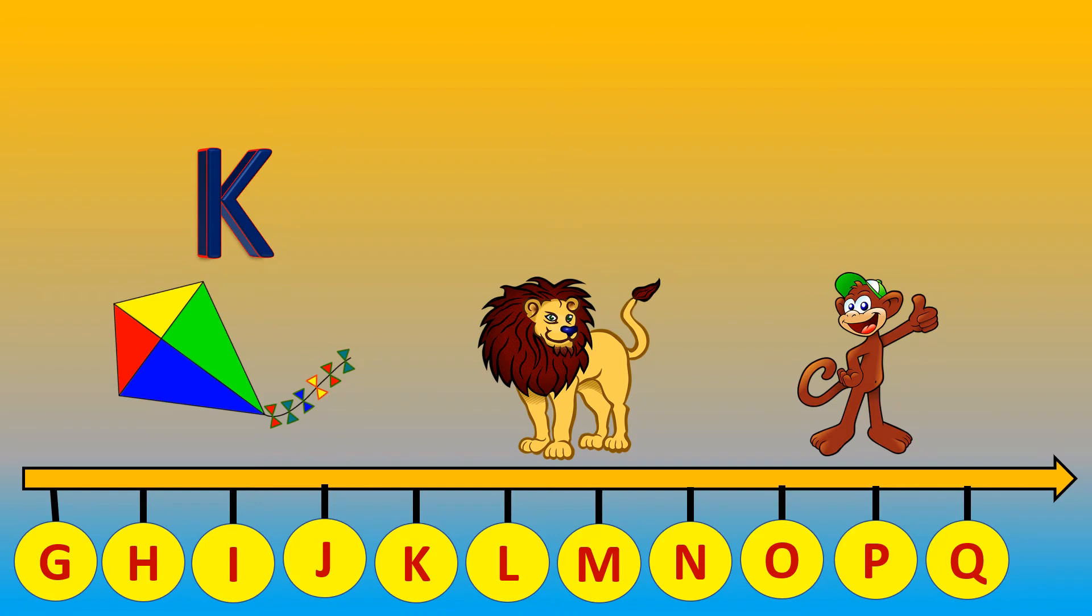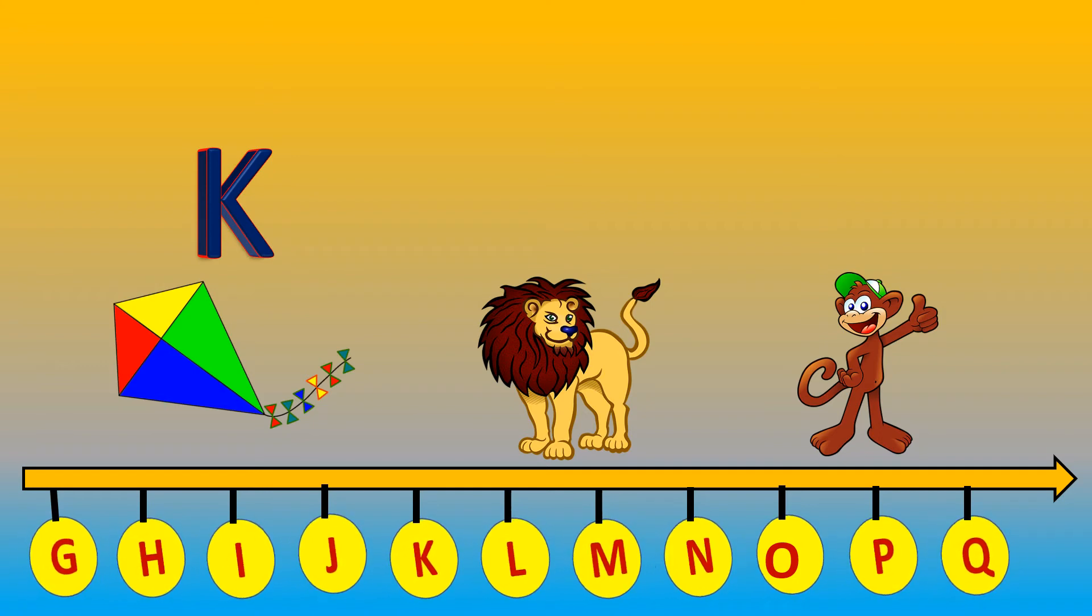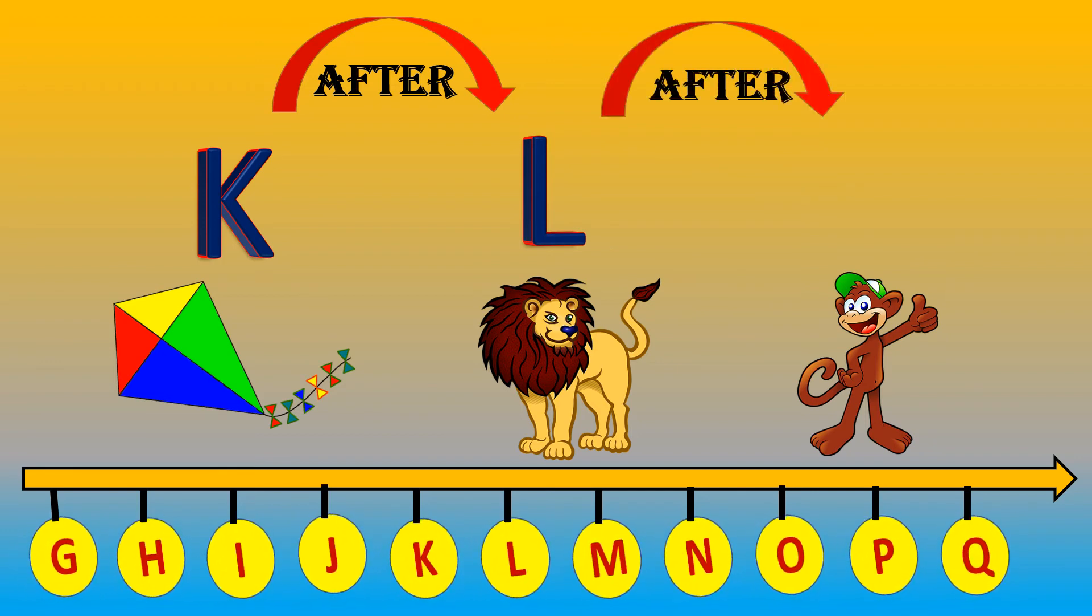Let's look at one more example. So, we have letter K with us now. Carefully look. The letters are also helping us by jumping. So, which letter is after K? Oh, it's letter L. Great. Now, which letter is after L? It's letter M. Great job. Good job.